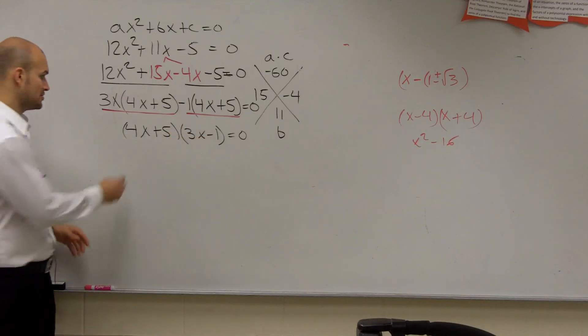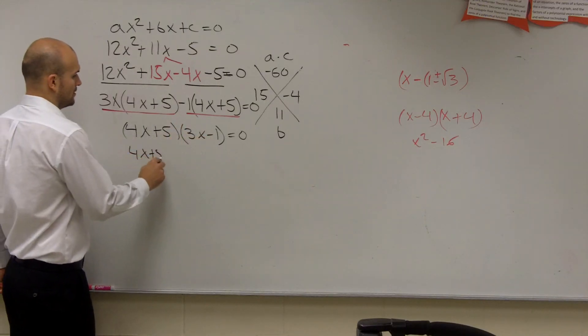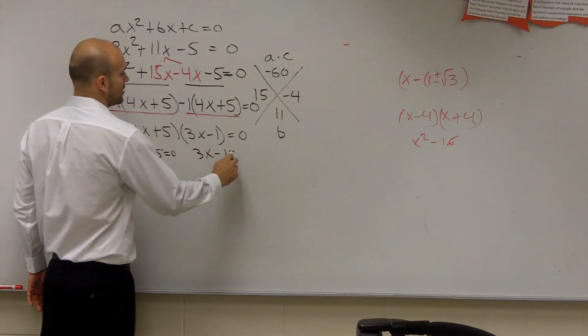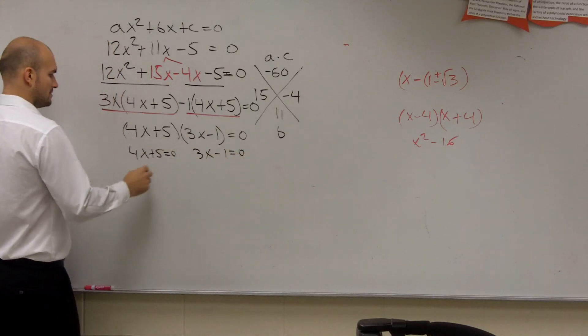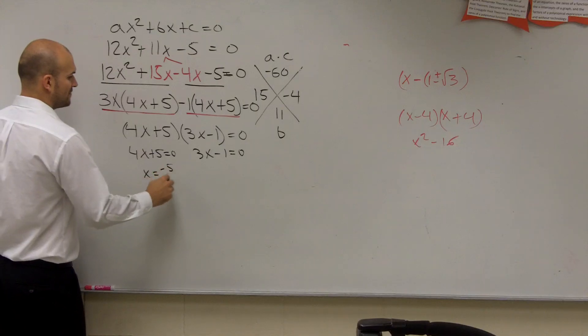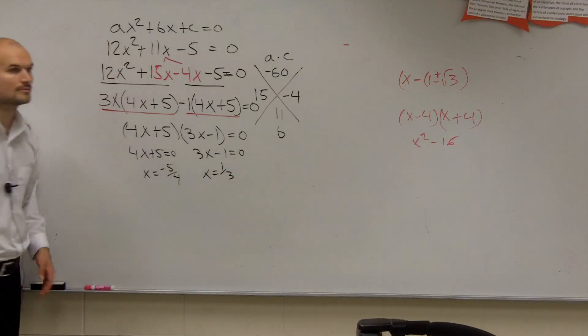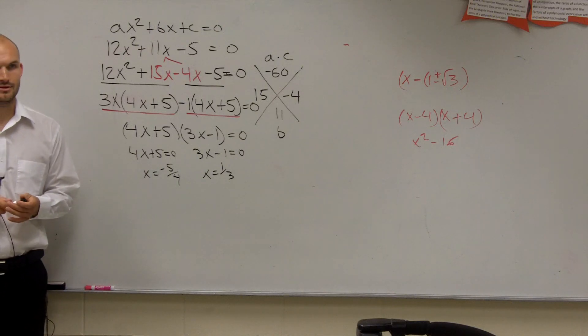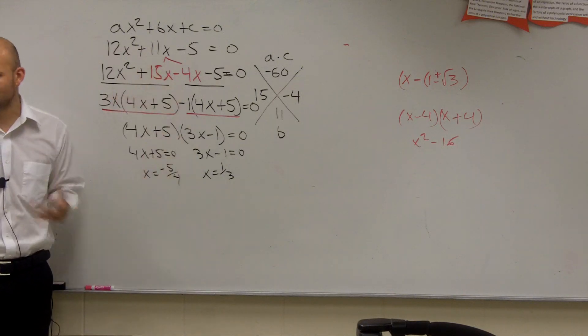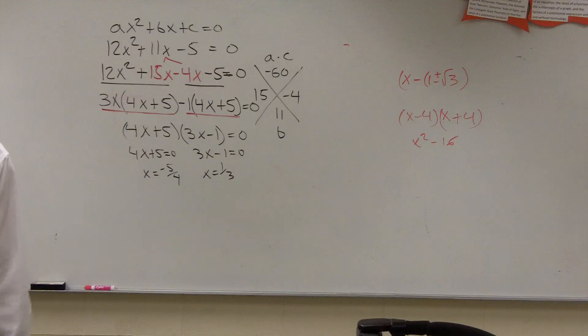4x plus 5 equals 0, and 3x minus 1 equals 0. Solve. You get x equals negative 5 fourths. x equals a positive 1 third. Remember this. This is the technique to use to practice. Good stuff. Here we go.